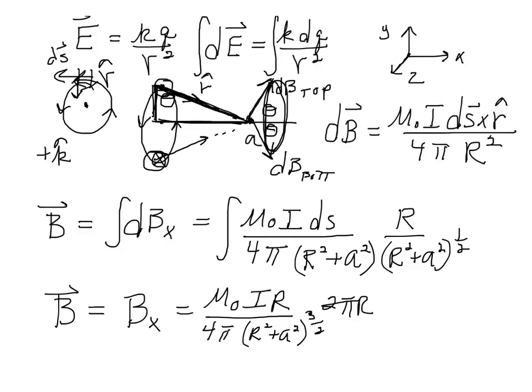And pulling all the terms together, we get that our answer, the magnetic field at a point a due to a single current carrying loop of radius r, is going to be mu naught i, the current in the loop, r squared, the radius of the circle, all divided by 2 times r squared plus a squared to the 3 halves power.